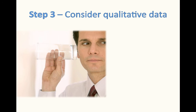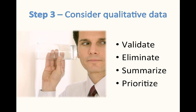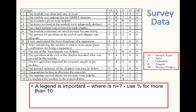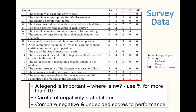Step three: consider qualitative data. First, you want to validate your data — do you think it's accurate? Sometimes people make comments that are in conflict with other data you find, so if needed, you want to eliminate those data. Once you have your data set, summarize it, then prioritize what's important to report. Looking at this survey data: it's nice to have a legend so you understand what the questions are asking, but we're missing the N. Remember to use percentages for more than 10. Also, be careful of negatively stated items — sometimes they'll trick people into answering the wrong question. A number of people answered strongly agree although they were positive on many other items. Compare the negative and undecided scores to the individual's performance.